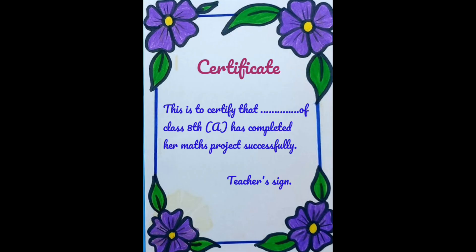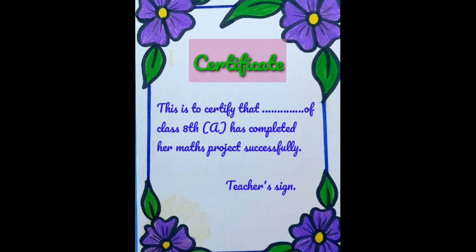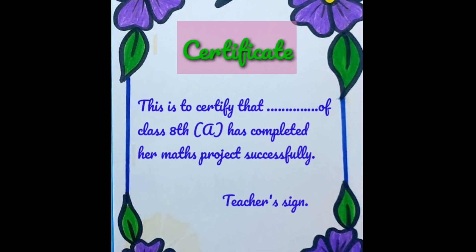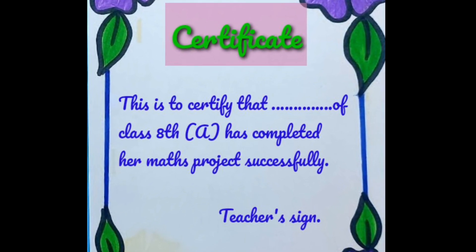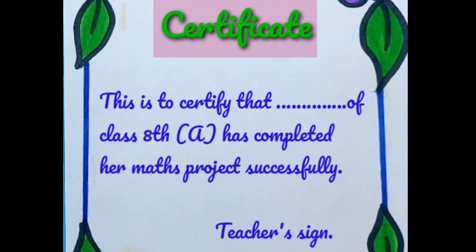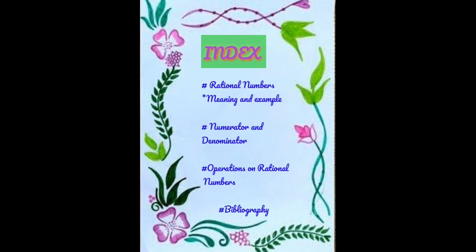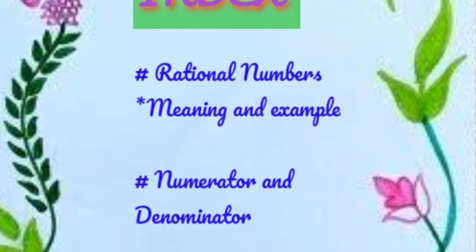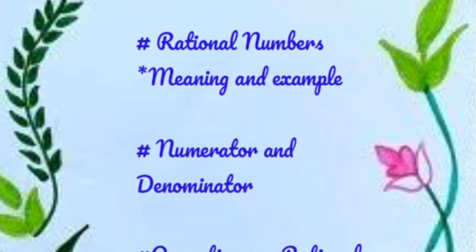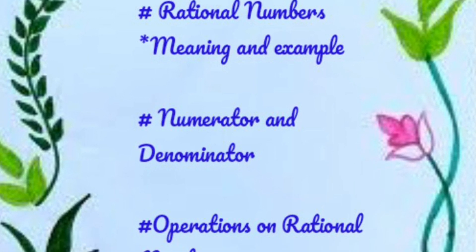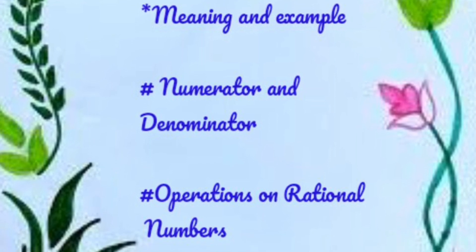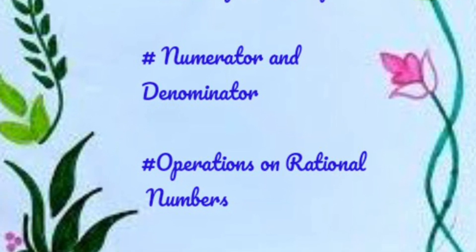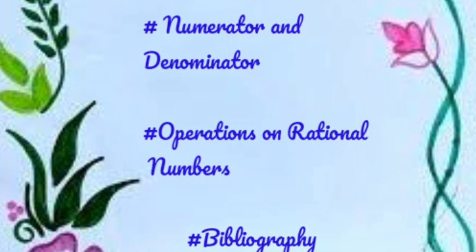The next page is certificate. The next page is index. The first title is rational number — meaning and example. Next is numerator and denominator. Next is operations on rational number, and last one is bibliography.